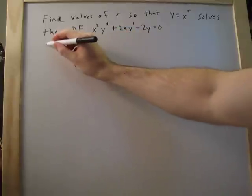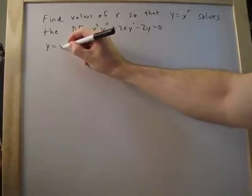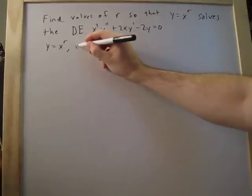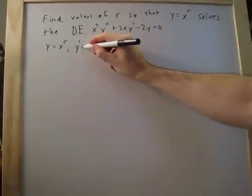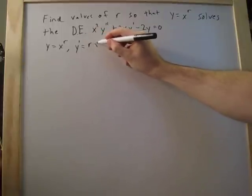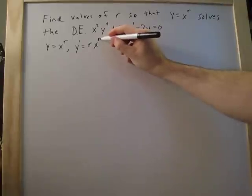So we can start it off saying y equals x to the r. And then we'll go ahead and say y prime equals r x to the r minus 1. So we'll just bring that down and make this r minus 1.